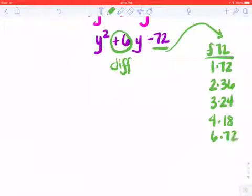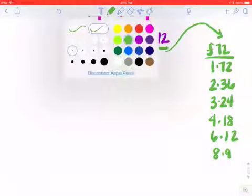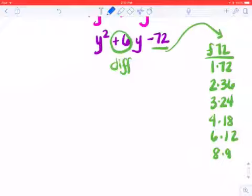Six and twelve. There we go. And eight and nine. So I want a difference of six. So this pair right here is my difference of six. I want that six difference to be positive, so the bigger number, which is twelve, is going to get the plus sign. And six is going to get the minus sign.